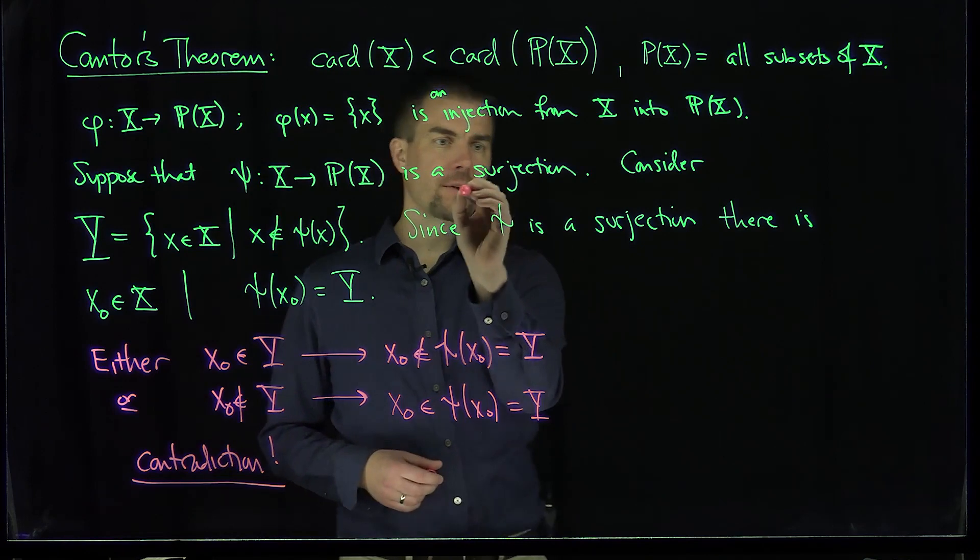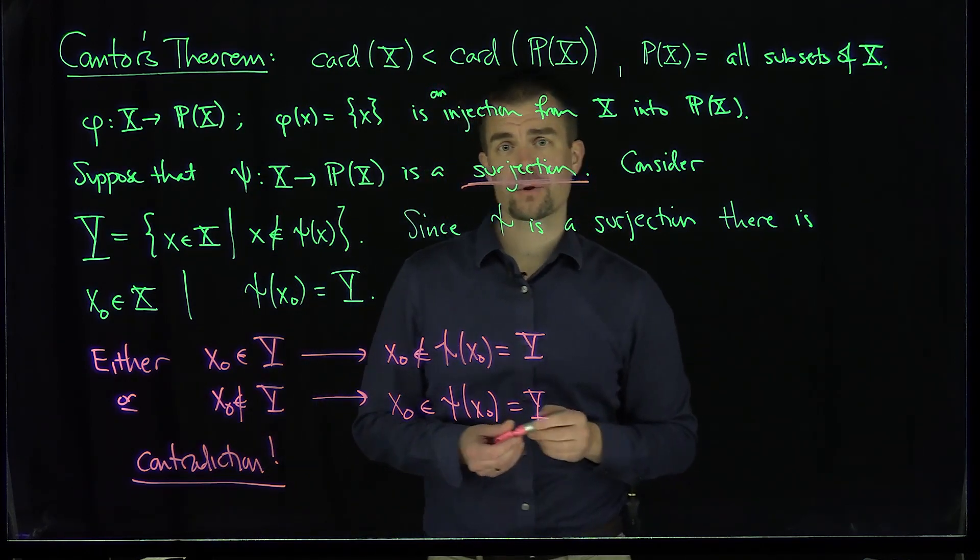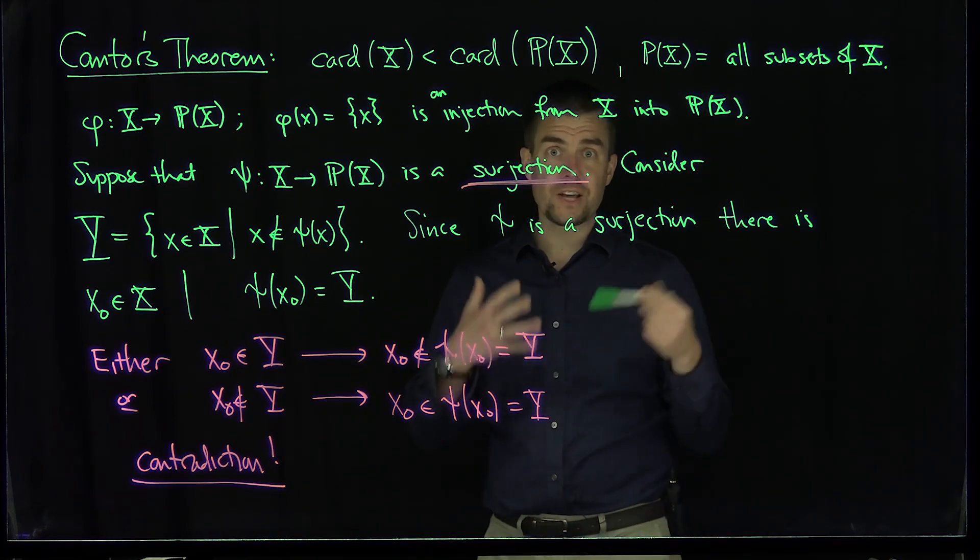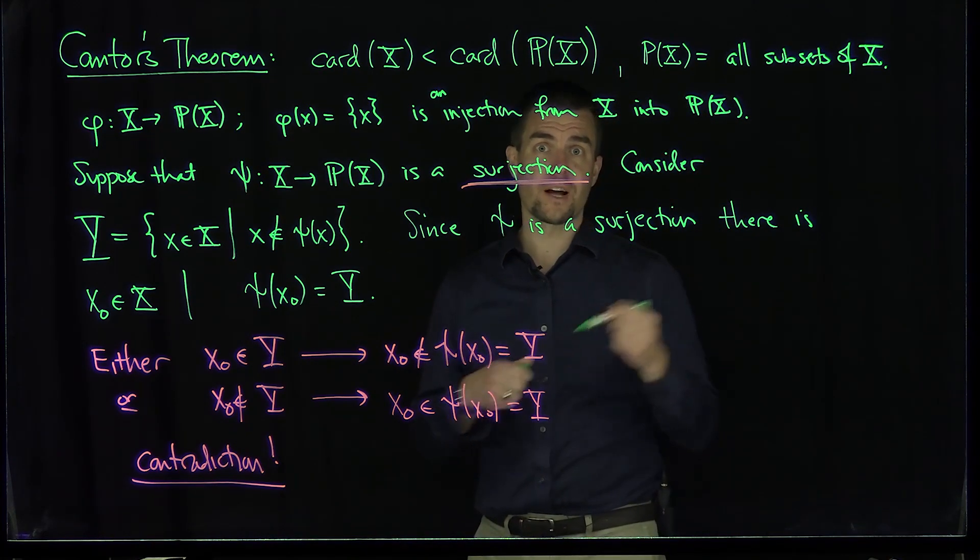In other words, the contradiction is that there's a contradiction to surjection, so there is no surjection between these sets. And so what we've shown, therefore, is we've shown that there is always a cardinality which is larger than a given cardinality.